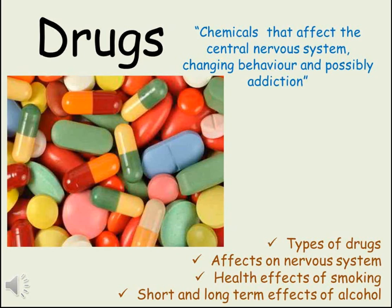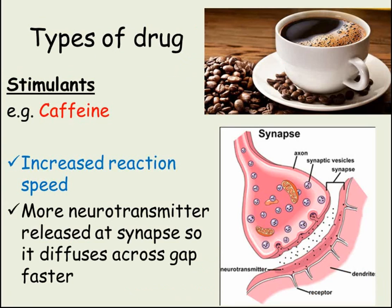To begin with, let's look at these four types of drug. Remember that a drug is a chemical that affects the nervous system, causing a change in behaviour and possible addiction. Addiction is where someone needs to take the drug in order for their body to work at a normal level.